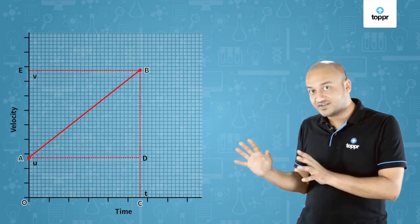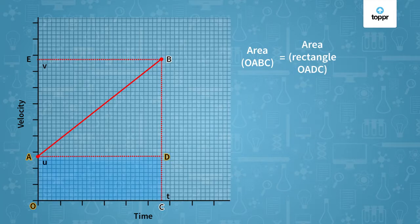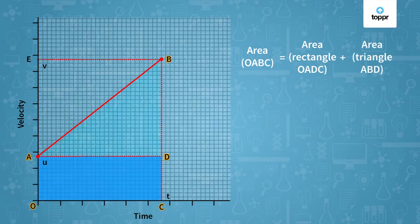Let's look at this more closely. You can see that the area O, A, B, C is actually a mixture of two areas. The first is the area of the rectangle O, A, D, C and the second is the area of the triangle A, B, D.